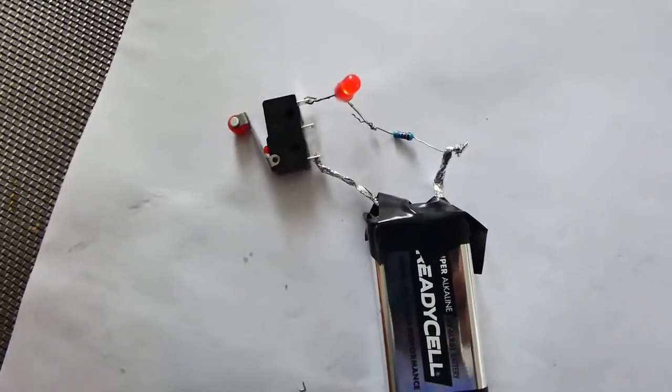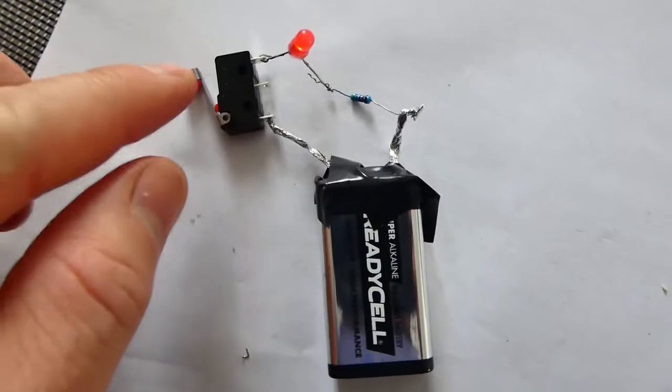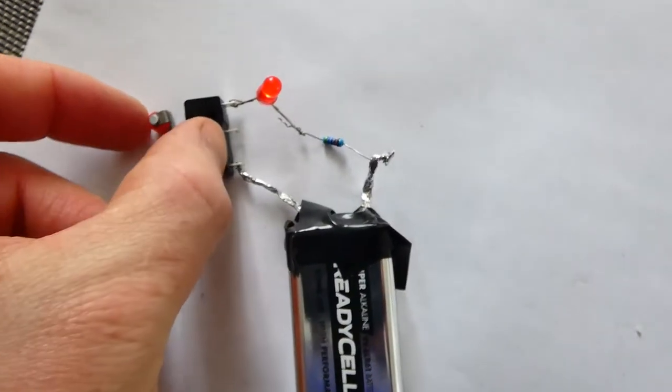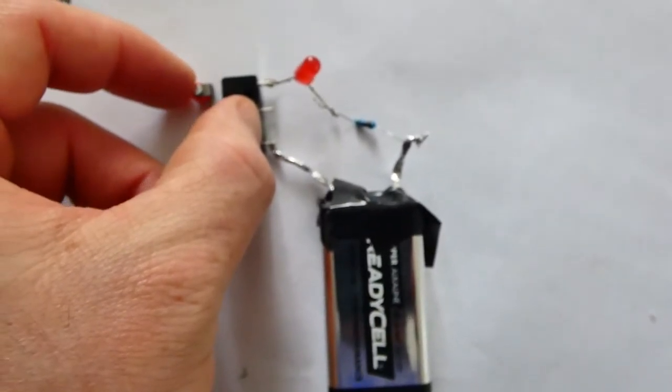Now this is the circuit with the limit switch added. We've got the limit switch set to the normal closed position, which means when it's closed, it breaks the circuit. It's just a circuit breaker.